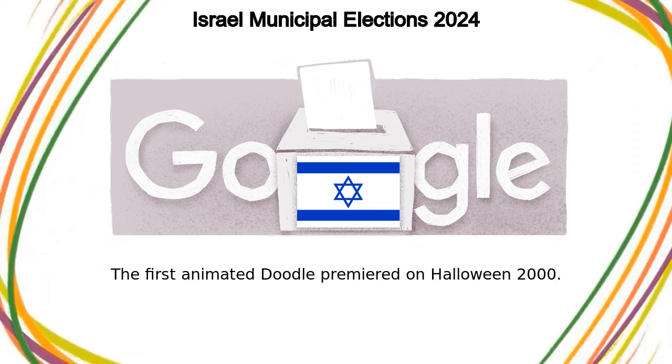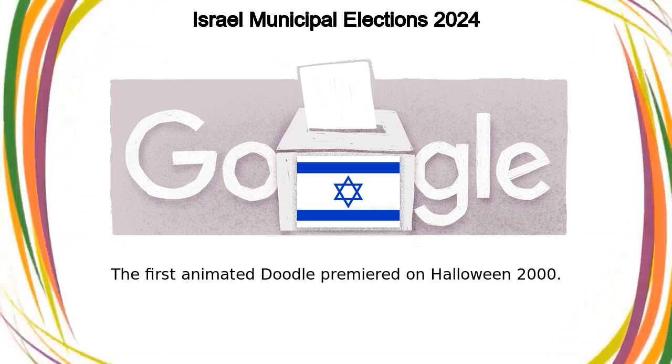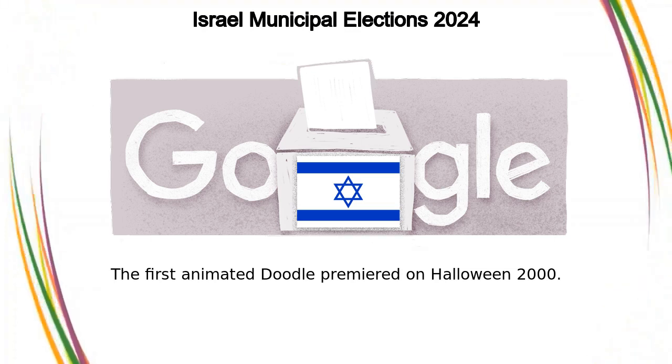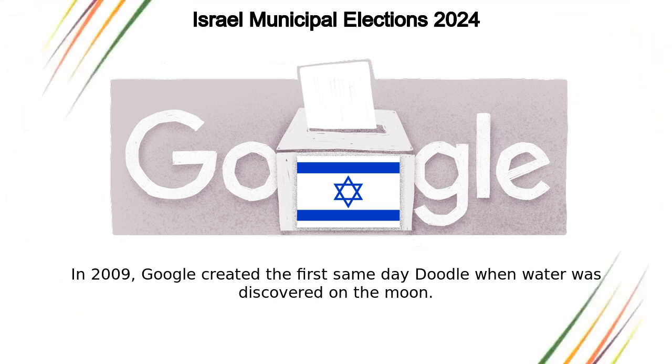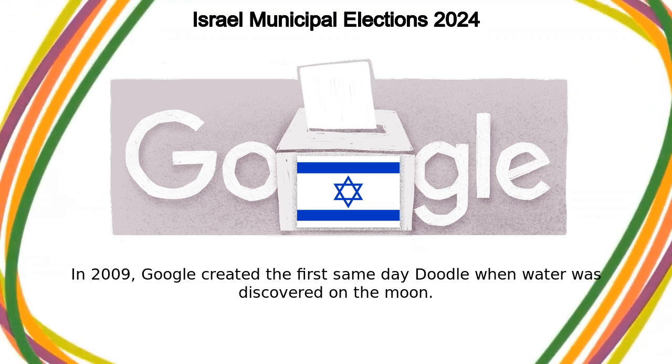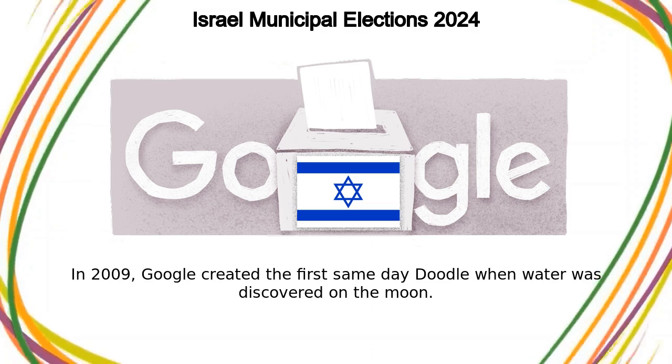The first animated doodle premiered on Halloween 2000. In 2009, Google created the first same-day doodle when water was discovered on the moon.